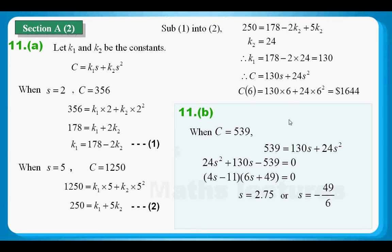And with the solution, we have s equals 2.75 or s equals minus 49 over 6. As far as we know, the parameter cannot be a negative number, so we reject the second solution.